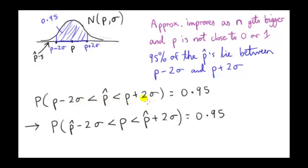We can turn this around. If P hat is within 2σ standard deviations of P, it means that P the unknown population proportion is within 2σ standard deviations of P hat.